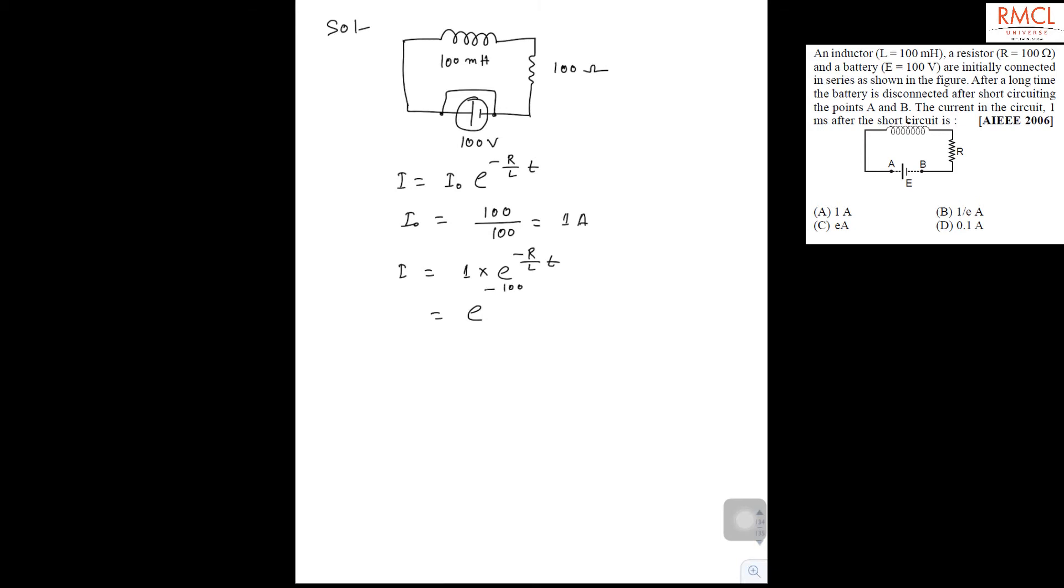...minus 100 upon L, which is given as 100 mH, that's 100 × 10^(-3). And time is given as 1 millisecond, that is 1 × 10^(-3).